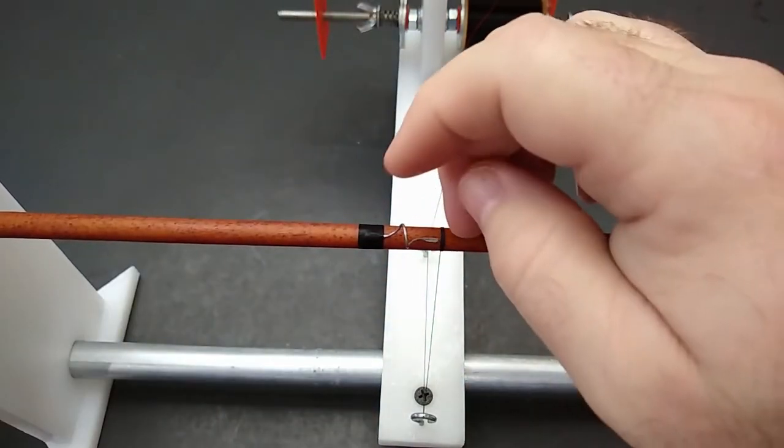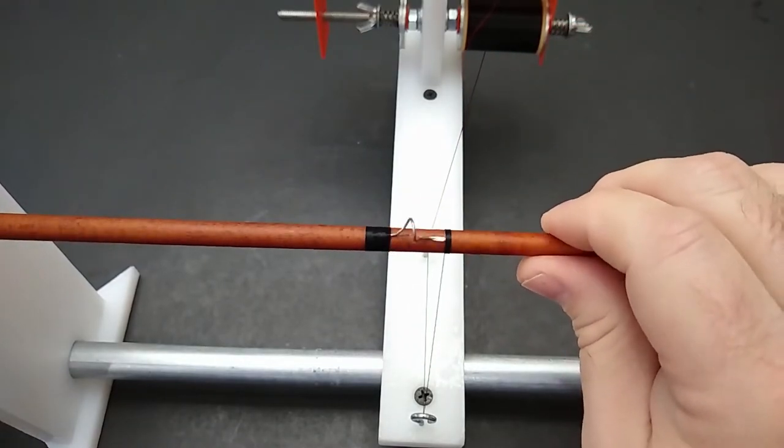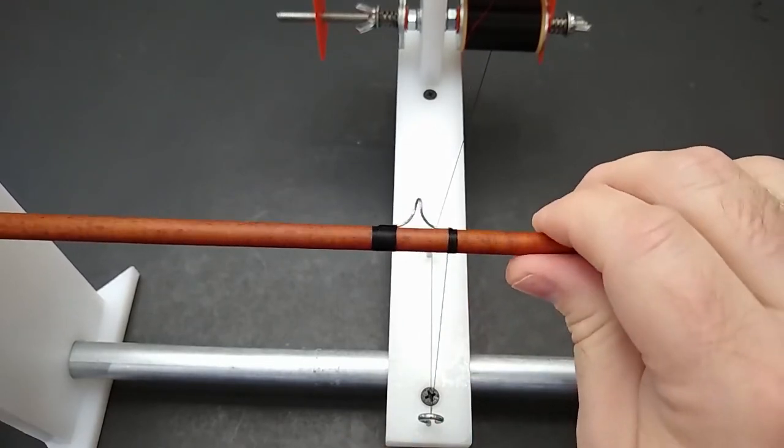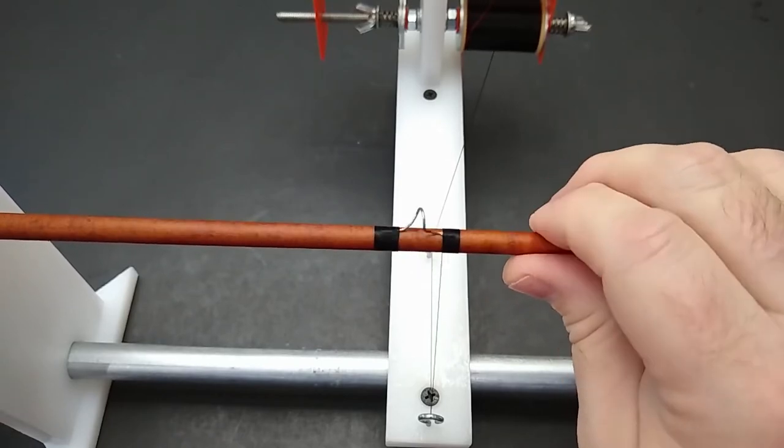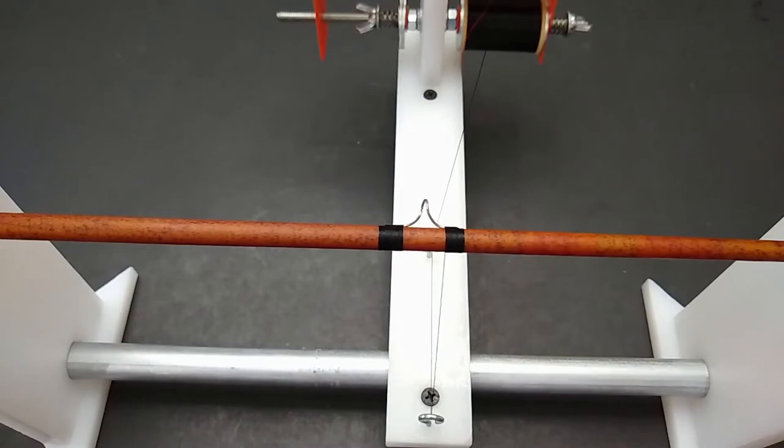That way I pull the tag end completely under the threads. Nothing sticks out there's nothing to trim. That's just the way I like to do it but you definitely want to play around with it and try different ways and come up with the way that you like the best. I just like not having to trim my tag ends once they're pulled through. It's just easier to me that way.